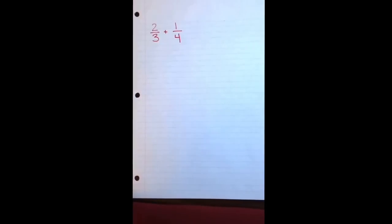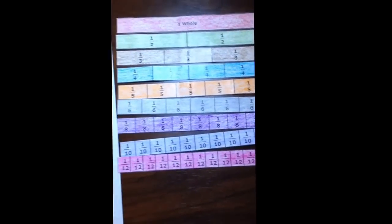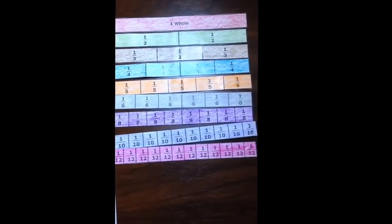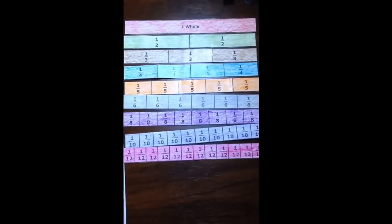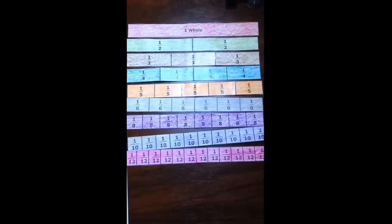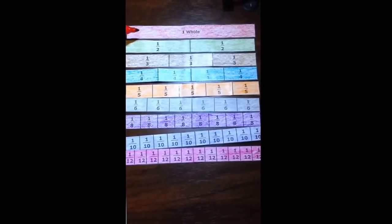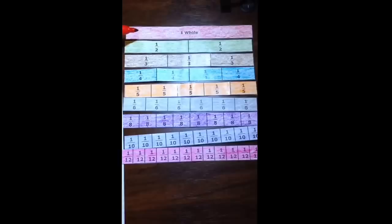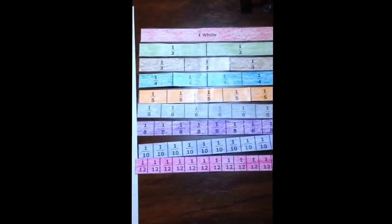I'm going to show you how to add fractions using fraction strips, and these fraction strips you can print online. They compare different size fractions as a part of the whole. So they're all the same size as this one whole strip. They're just divided into different sized pieces. So the fractions we're going to add are two thirds plus one fourth.